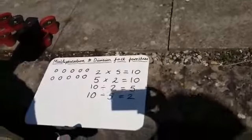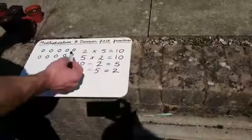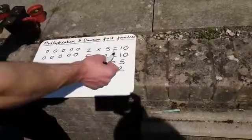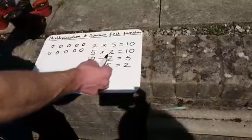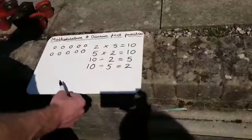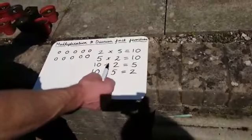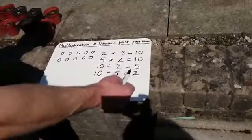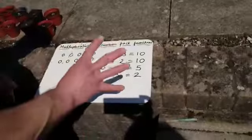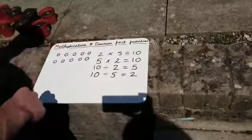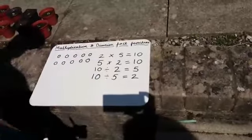We call these fact families. I've got 2 times 5 equals 10. 5 times 2 also equals 10. I've got 10 divided by 2 equals 5. And then I've got 10 divided by 5 equals 2. So for each fact family, there should be 4 facts: 2 multiplications and 2 divisions.